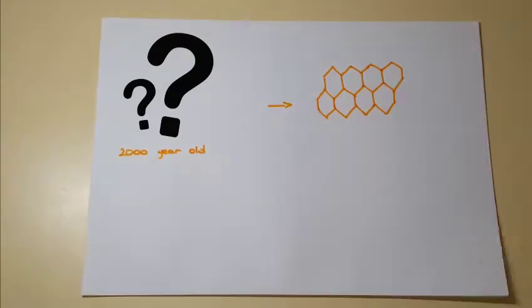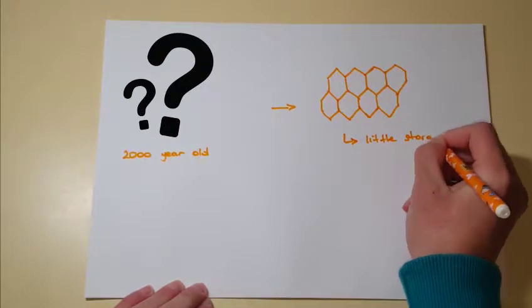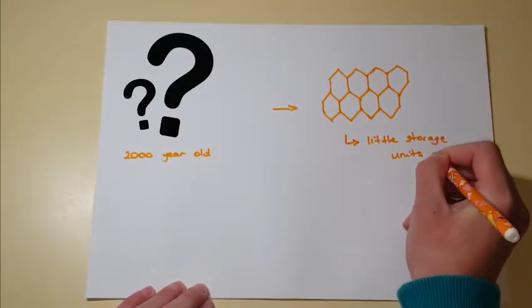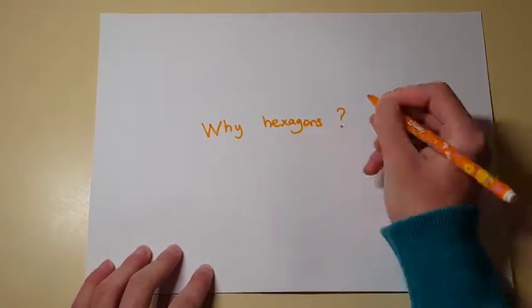Bees need serious space efficiency to store their nectar and to keep their colony secure. The solution to this problem is to build little storage units, just big enough for a bee to fit into. But why hexagons?